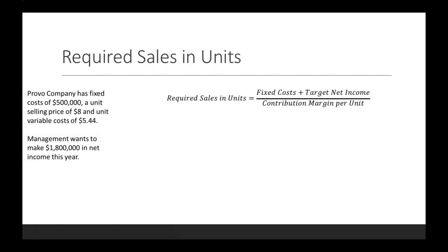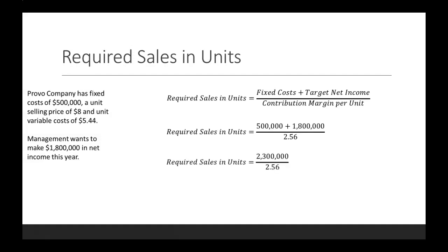Now, what about required sales in units? We switch up the equation a little bit — it's fixed costs plus target net income divided by your contribution margin per unit. Good news, we already found that contribution margin per unit; that was $2.56. So our required sales in units will be $2,300,000 divided by $2.56, and we see that we need to sell 898,437.5 units to achieve the net income of $1.8 million.